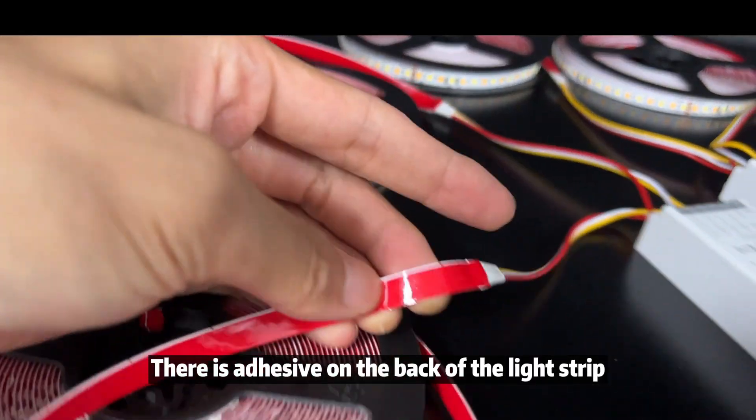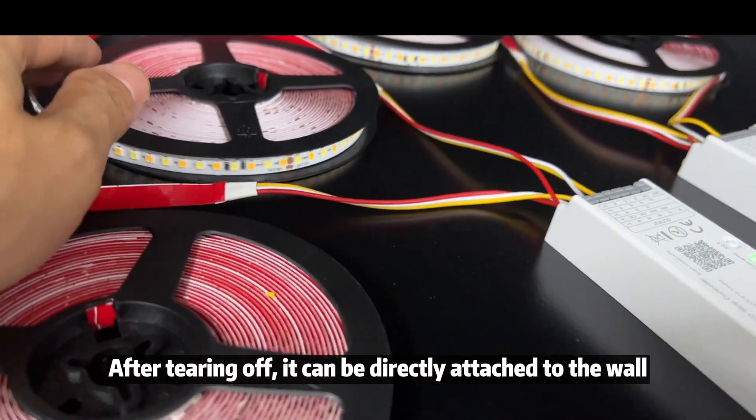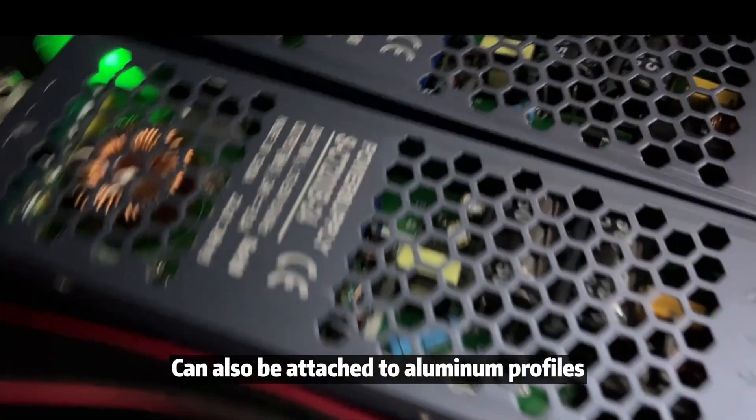There is adhesive on the back of the light strip. After tearing off, it can be directly attached to the wall. Can also be attached to aluminum profiles.